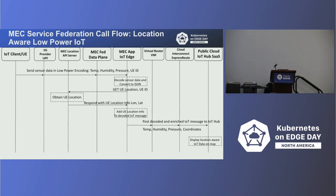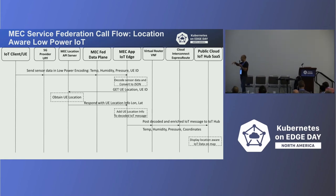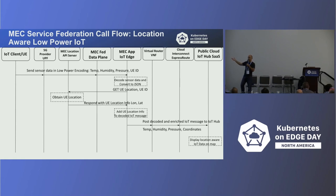This shows the flow of data from the user equipment — the IoT device — all the way to Azure IoT Hub. The sensor data is sent through the UPF, through the MEC Federation Data Plane (the connectivity between the two sites), to the MEC application, which is IoT Edge. Then the IoT Edge application requests the location data from the location API server, gets the location information, enriches the data with it, and sends everything — temperature, humidity, pressure, and latitude/longitude — to IoT Hub on Azure, where it can be displayed.